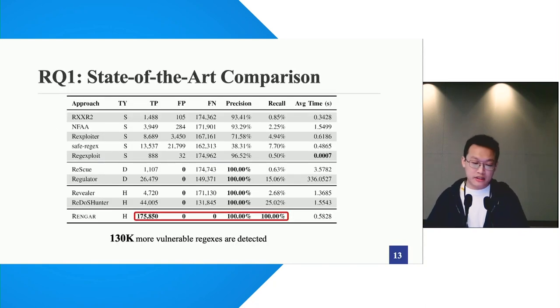In the first research question, we compare with nine SOTA tools. The key conclusion here is that we can identify much more vulnerable rejects than all the existing tools. In another figure shown in the paper, we could also make a conclusion that we can identify all the vulnerable rejects that are identified by the existing ones.